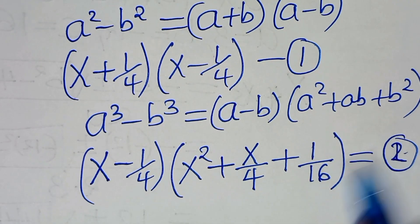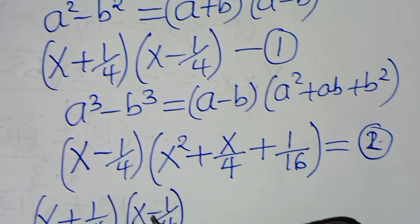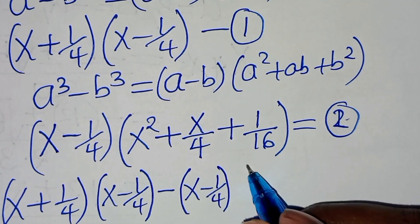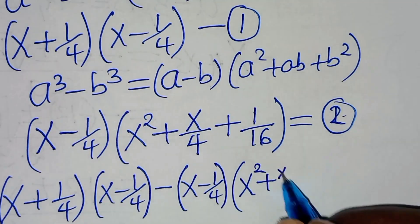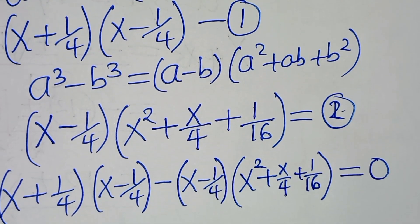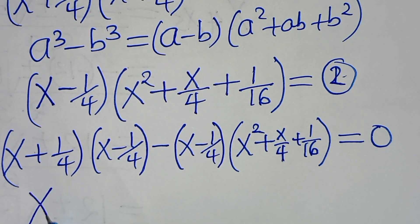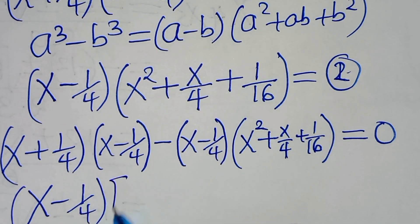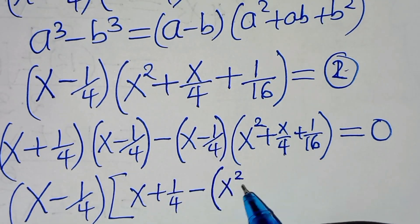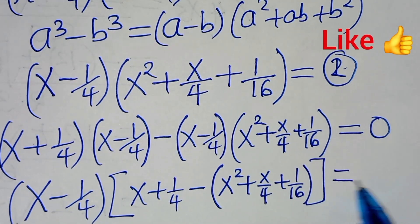So, let's combine equation 1 and 2, so that we have (x plus 1 over 4)(x minus 1 over 4), subtract (x minus 1 over 4)(x squared plus x over 4 plus 1 over 16), this is equal to 0. From here, we factor out (x minus 1 over 4), so that we have (x minus 1 over 4) times [(x plus 1 over 4) minus (x squared plus x over 4 plus 1 over 16)], this is equal to 0.